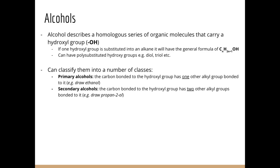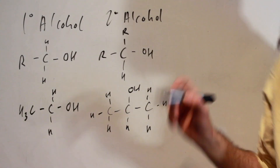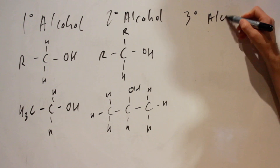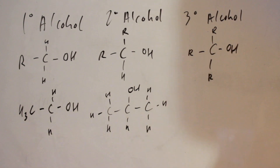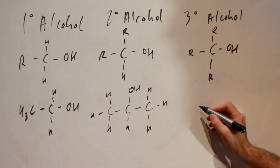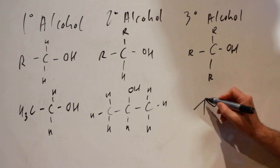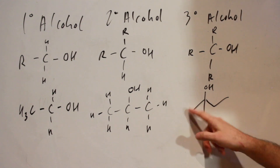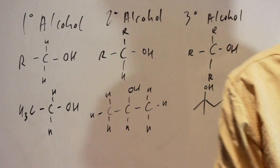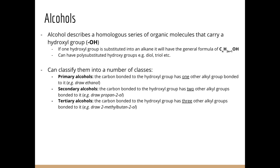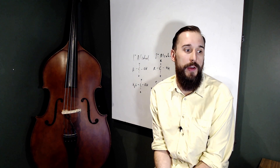Leading naturally from that, we have tertiary alcohols, where the carbon bonded to the hydroxyl group has three other alkyl groups. For example, 2-methylbutan-2-ol: if we draw a skeletal diagram with carbons one, two, three, four, we have the methyl at position two and the alcohol also at position two, giving a carbon bonded to three other carbon groups — that's our tertiary alcohol. Primary, secondary, and tertiary classification has effects on certain chemical reactions they undergo and certain physical properties they will have.